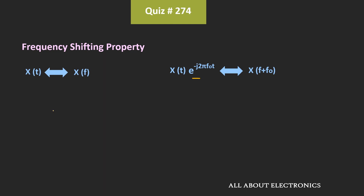So in this case, we have been asked to find the inverse Fourier transform of X(3f+2). In other words, we can say that we have been asked to find the inverse Fourier transform of X(3f+2). Here, 3 is the scaling factor, and with this scaling factor, the frequency is shifted by 2/3.